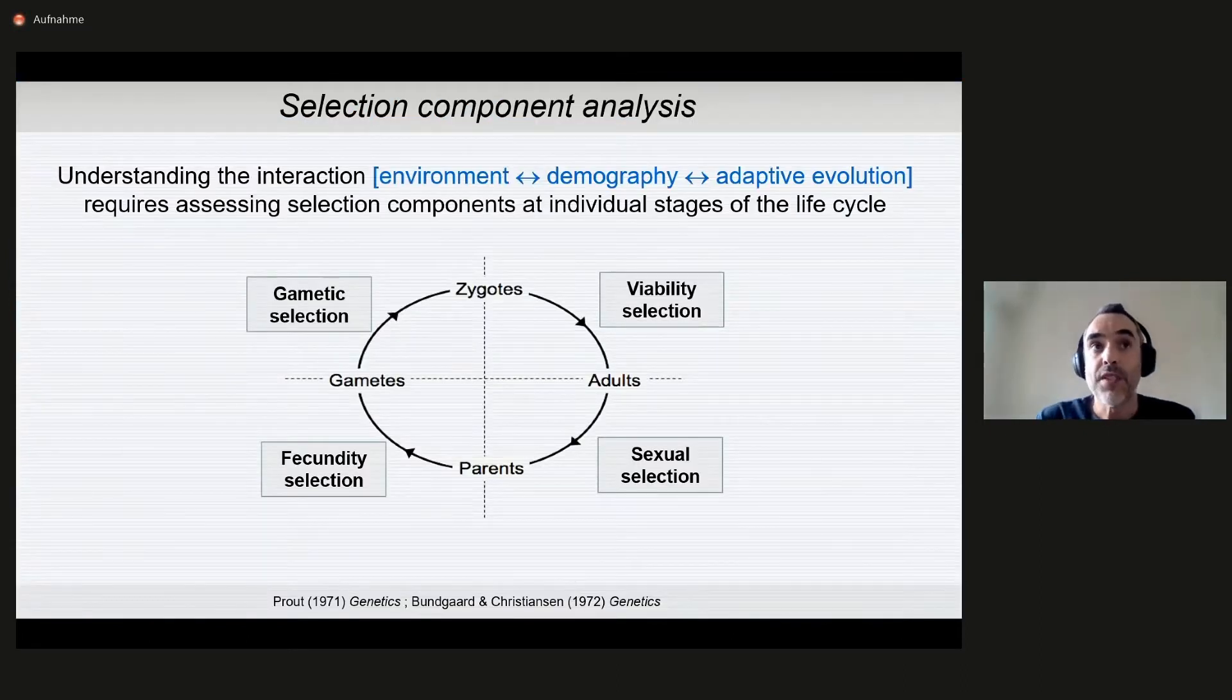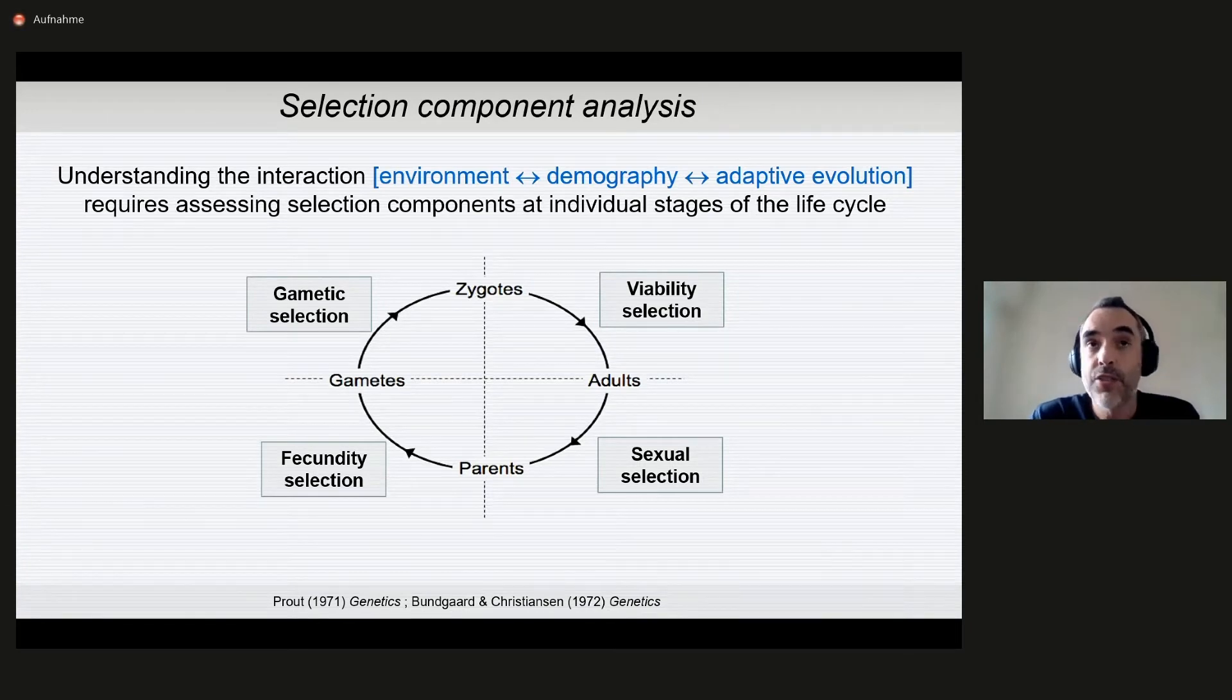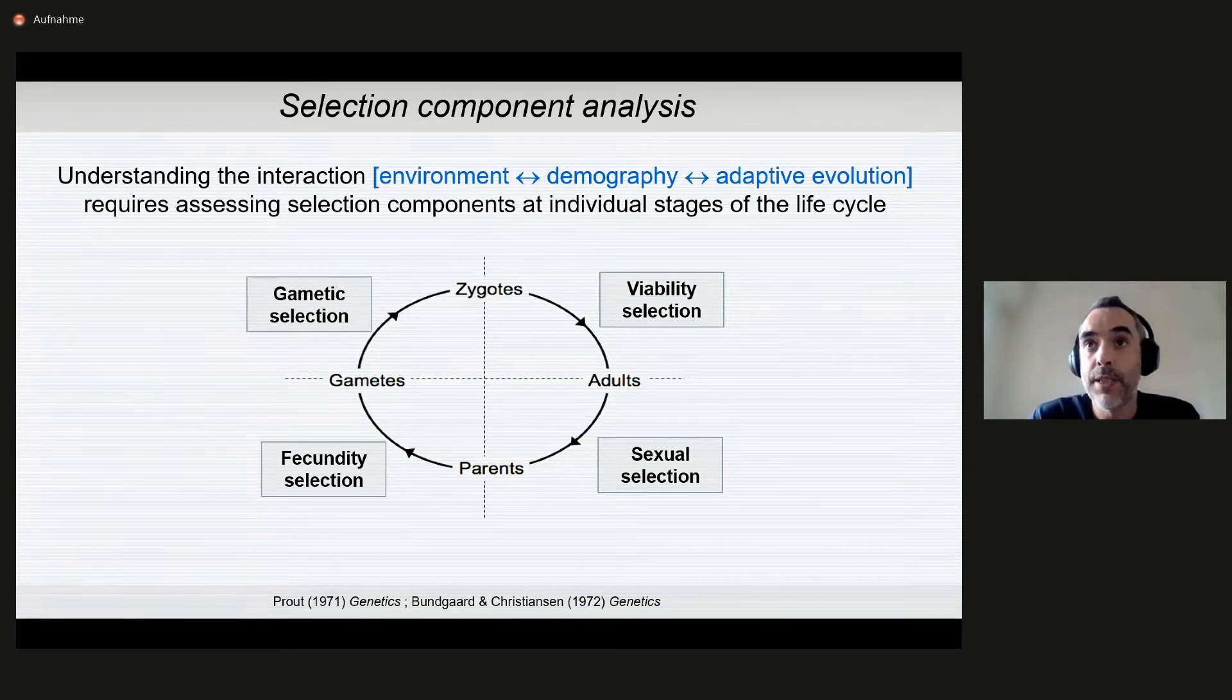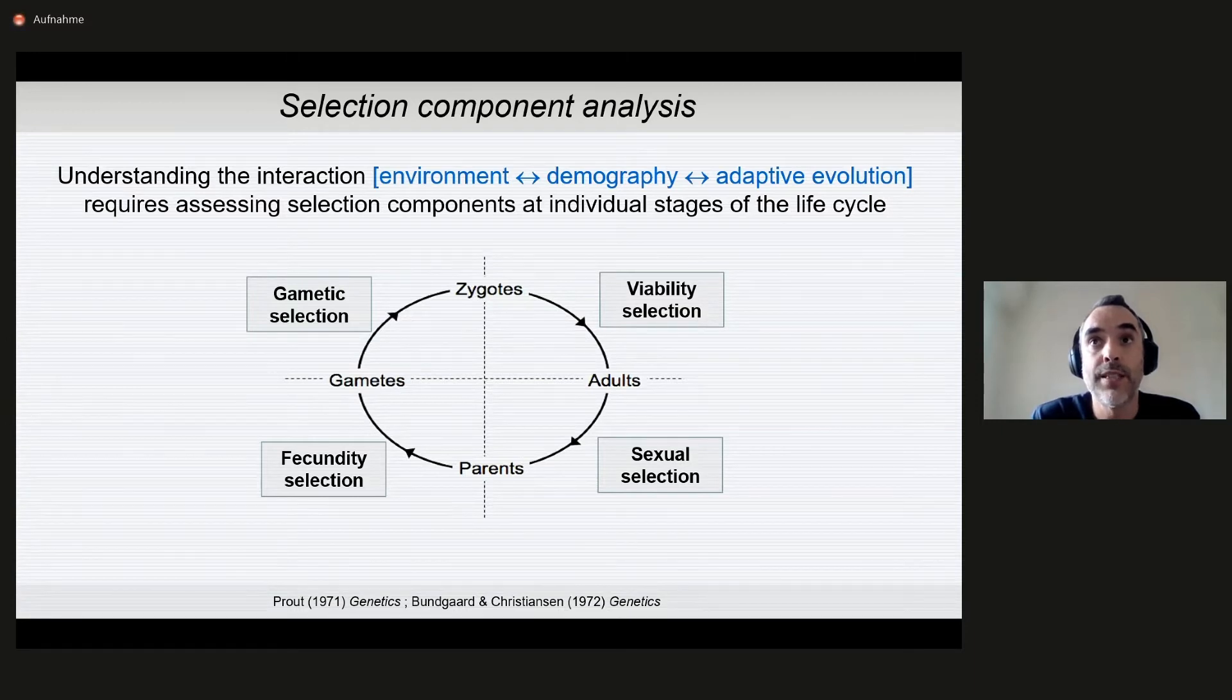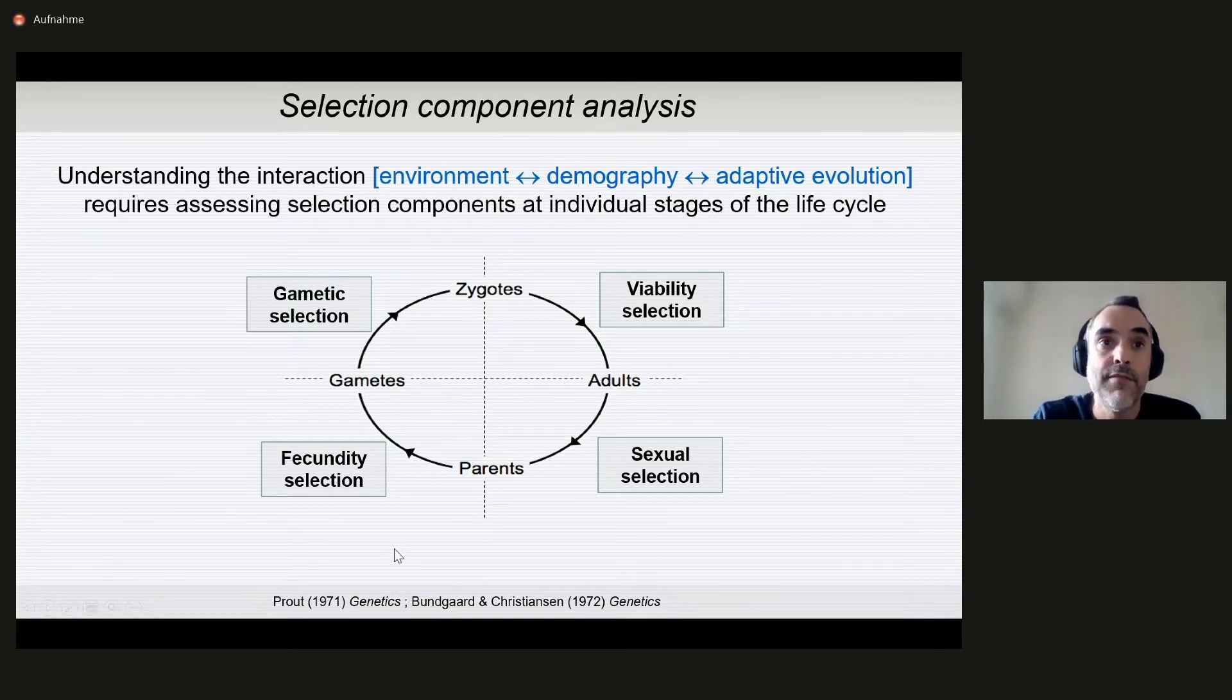If we have to understand the complex interaction between the environment and adaptive evolution, we have to take into account that the life cycle can be complex and that selection may be different depending on what stage we are dealing with. In the classical selection component analysis, we separate viability, sexual fecundity, and gametic selection.